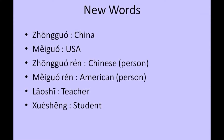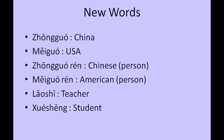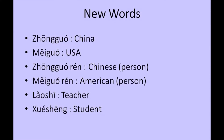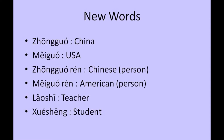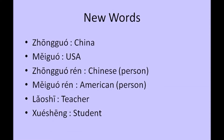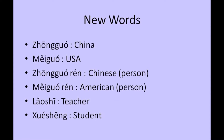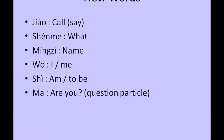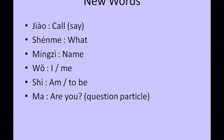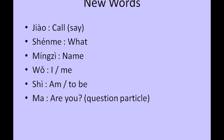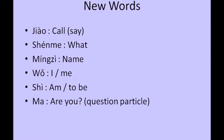美国, which means USA. 美国. 中国人, which means Chinese person. 中国人. 美国人, which means American person. 美国人. 老师, which means teacher. 老师. 学生, which means student. 学生. 叫, which means to call or address someone. 叫. 什么, which means what. 什么. 名字, which means name. 名字.